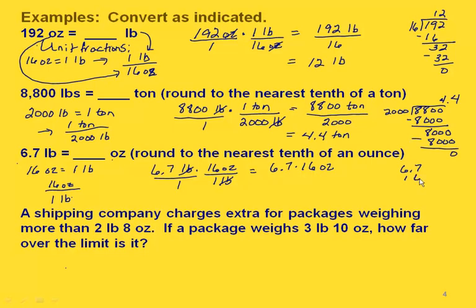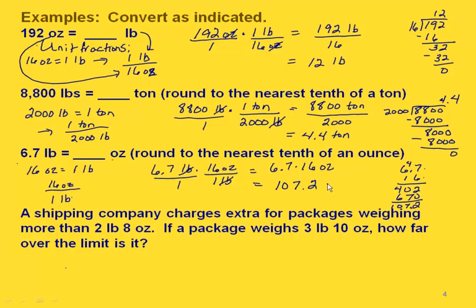We have 6.7 times 16 ounces all over 1, so we need to multiply 6.7 times 16. That gives us 42 in the partial products; 36 plus 4 is 40, and adding the columns gives us a 2, a 7, and a 10. Since we're multiplying decimals, we had one decimal place and none here, so we put one decimal point in our answer. That gives us 107.2 ounces.